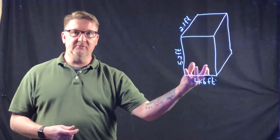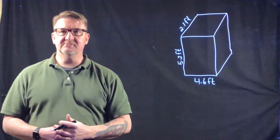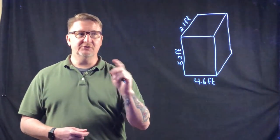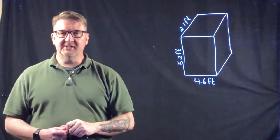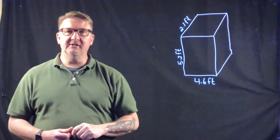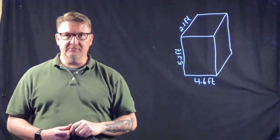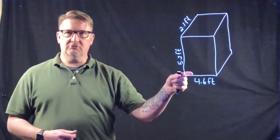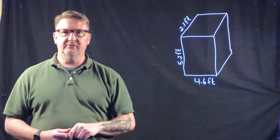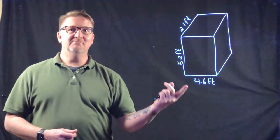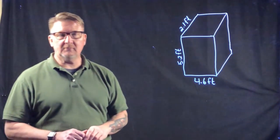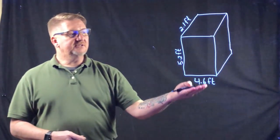I'm going to show you four examples — two with the rectangular prism and two with the triangular prism. The first of each is going to be finding the volume of the shape, and the second is going to be finding that missing length when I have the volume. Let's get started.